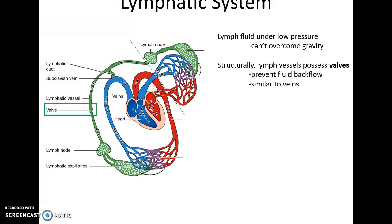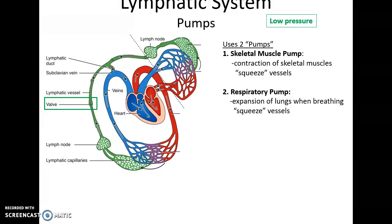Because of the low pressure, lymph vessels have little valves — small pockets of tissue that help prevent the backflow of lymph fluid, very similar to how veins work. Also, the lymph vessels take advantage of two special pumps that also work for veins: the skeletal muscle pump, where skeletal muscles contract squeezing the lymph vessels pushing fluid toward the bloodstream, and the respiratory pump, where the lungs expanding squeezes the lymph vessels, helping fluid return to the bloodstream.